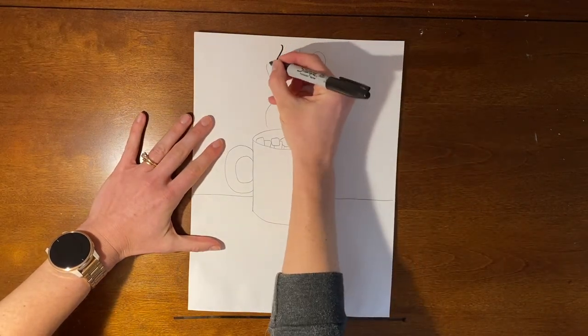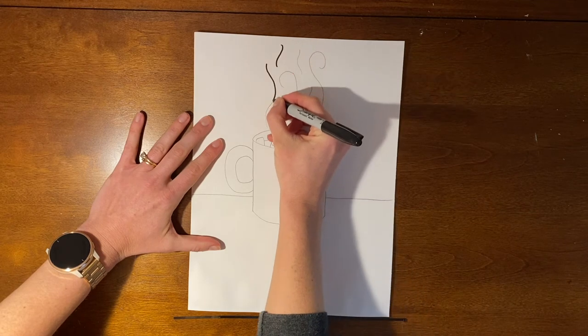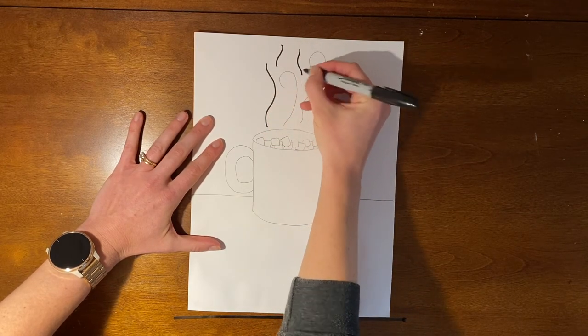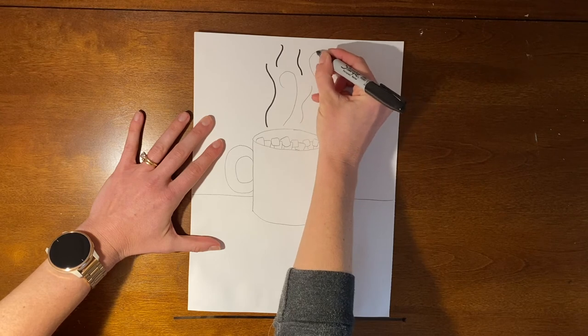Now, I'm going to trace all of my pencil lines with a black marker. Here, you can use whatever coloring materials you're going to use to make your patterns.